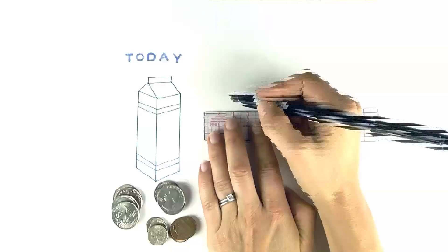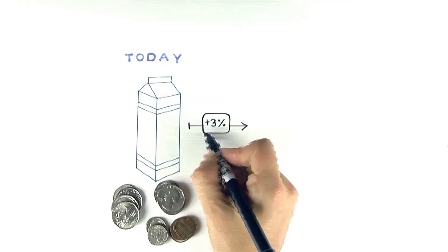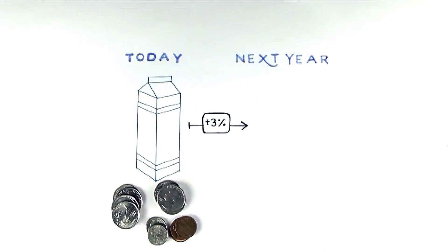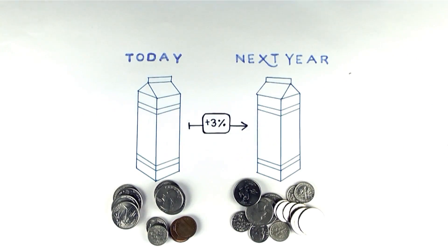Here's an example. If the cost of a half gallon of milk today is two dollars and 43 cents, a similar half gallon of milk will likely cost 250 in one year with average inflation. What's the big deal? Who needs to sweat seven cents, right? Wrong.